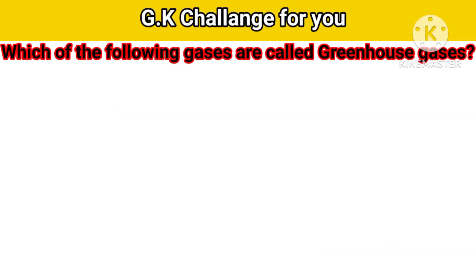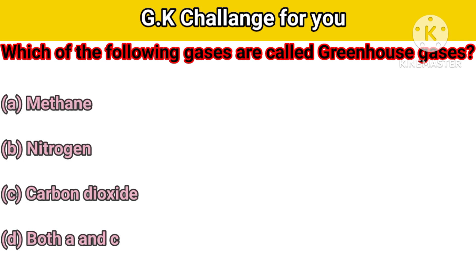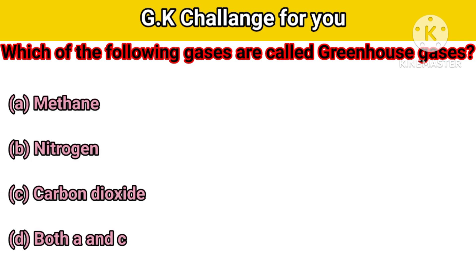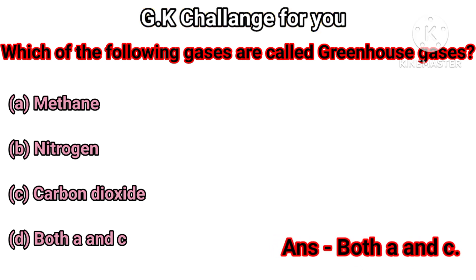Now, which of the following gases are called greenhouse gases? Option A: Methane, B: Nitrogen, C: Carbon Dioxide, D: Both A and C. Your right answer is both A and C — Methane and Carbon Dioxide.